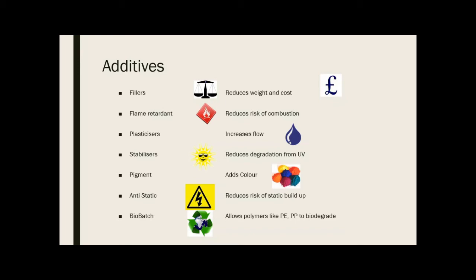In the manufacturing process, additives can be mixed into a polymer before it's manufactured to change its properties. Fillers reduce weight and cost — useful when making large quantities like plastic garden chairs where maximising material is a priority. Flame retardants reduce the risk of combustion, important for products near heat sources. Plasticizers increase flow, meaning they improve the material's ability to pour, which is helpful in injection molding so the material fills the mold easily.